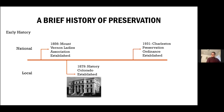Then we'll jump ahead to 1931, and Charleston, South Carolina establishes its own municipal preservation ordinance. That was actually the first municipal preservation ordinance established in the country. So there's actually a pretty long history of cities having this goal of preserving their history.